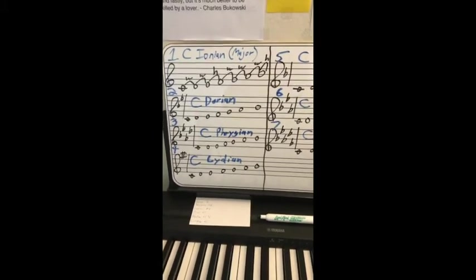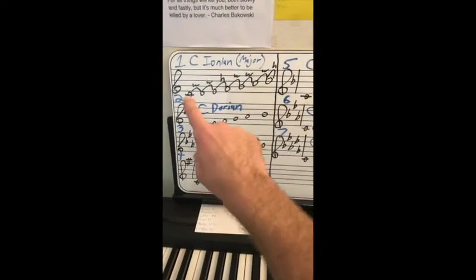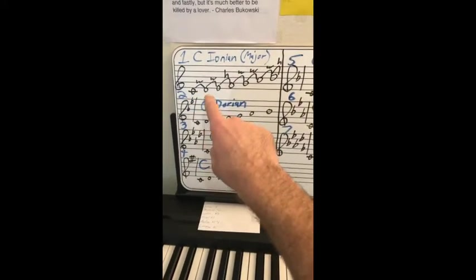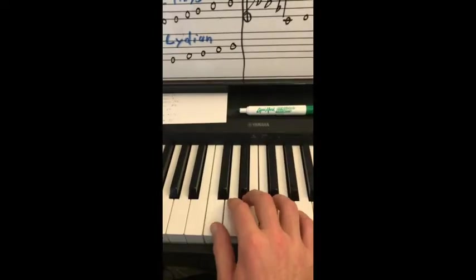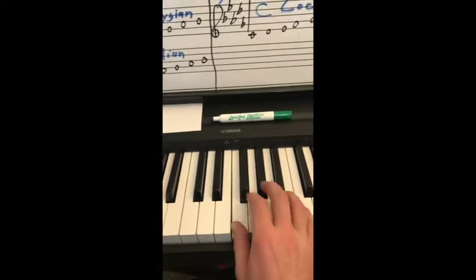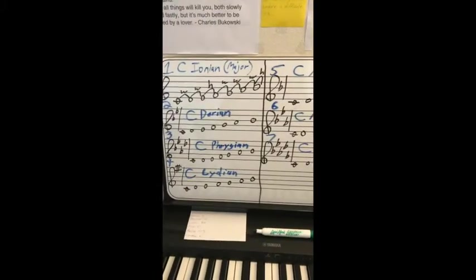So, we'll start with C major. Now, we're going to do every mode using C as a tonic. We'll start with C major. So, we have whole step, whole step, half step, whole step, whole step, whole step, half step. That's all the white keys. C major. So, that is its own unique sound.